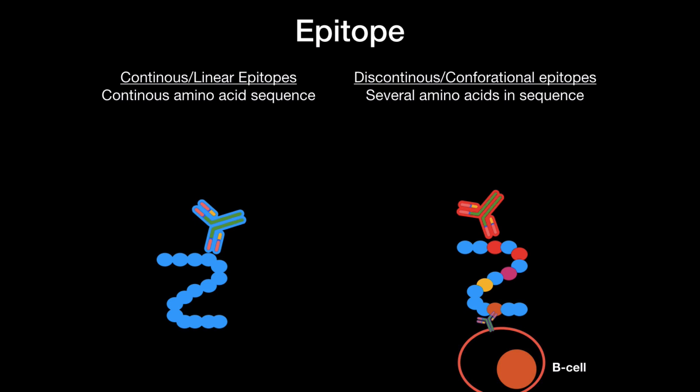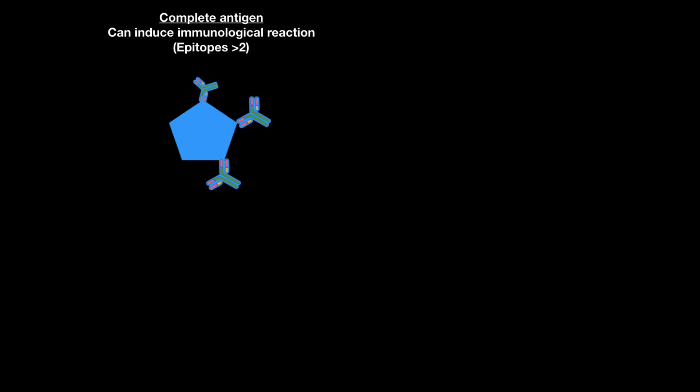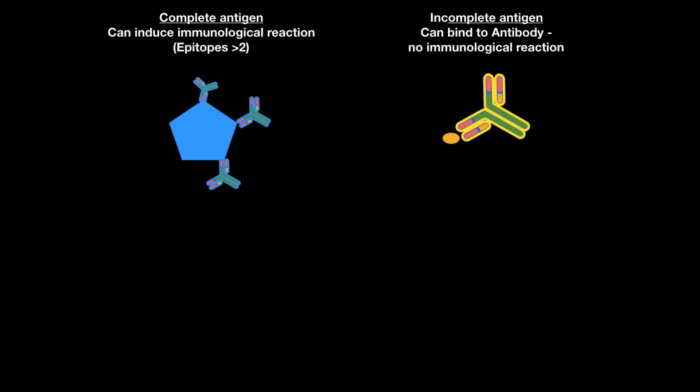We do have a small classification system of antigens which I found pretty helpful. First, we can classify them by their immunogenicity. Either it can be a complete antigen, which can induce an immunological reaction — it has to have more than two epitopes. Or it could be an incomplete antigen, which can bind to the antibody but nothing really happens because this antigen is too weak.